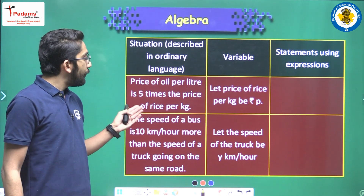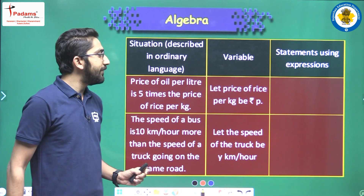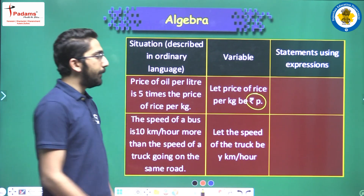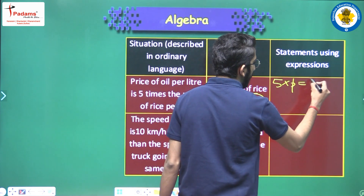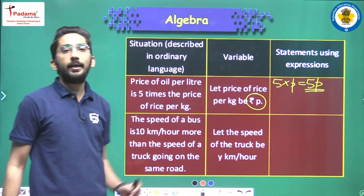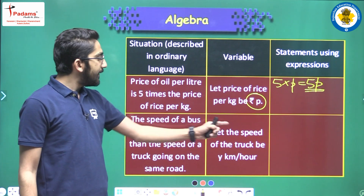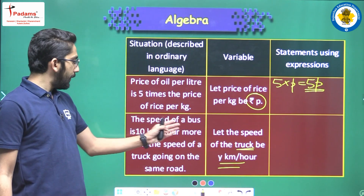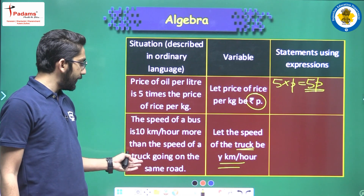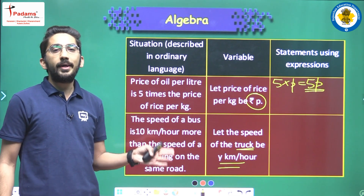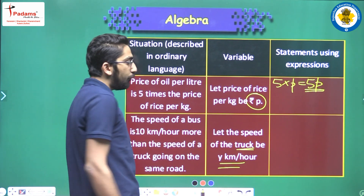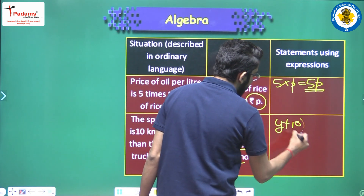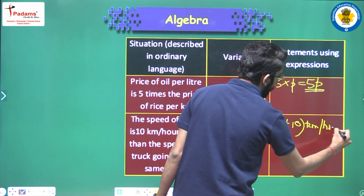Next: the price of oil per liter is five times the price of rice per kg. The price of rice is rupees p. Five times means five multiplied by p, which we can simply write as five p. So the price of oil will be five p. Next: let the speed of the truck be y kilometers per hour. The speed of a bus is 10 kilometers per hour more than the speed of the truck. So if the truck's speed is y, the bus's speed will be y plus 10 kilometers per hour.